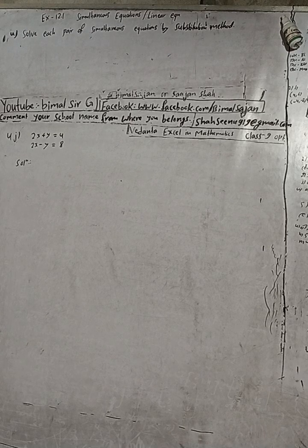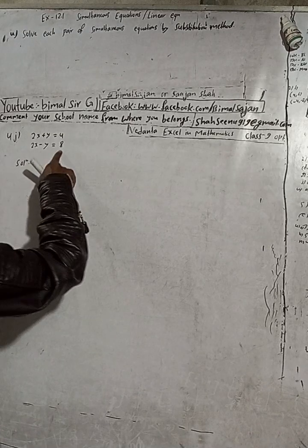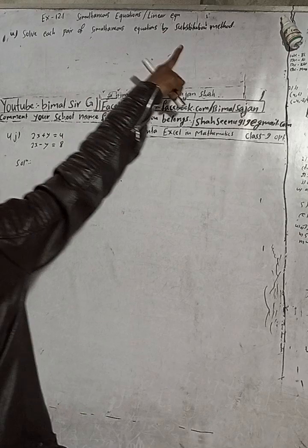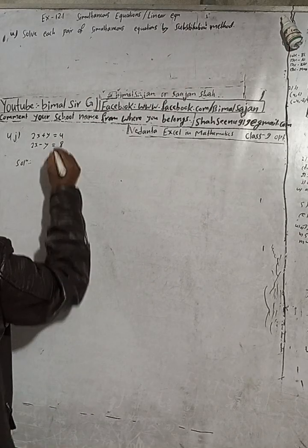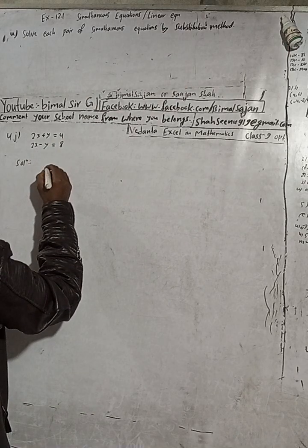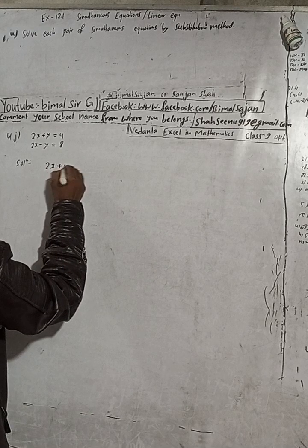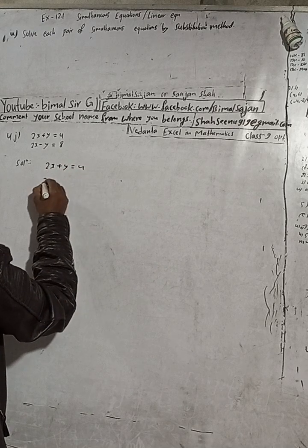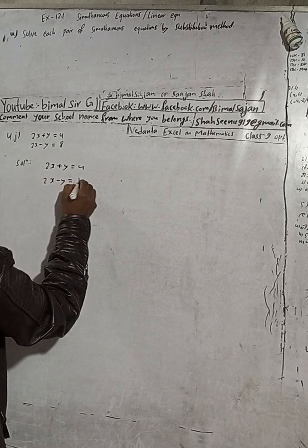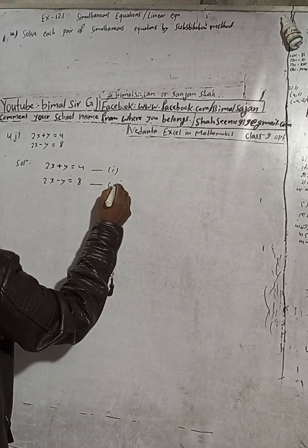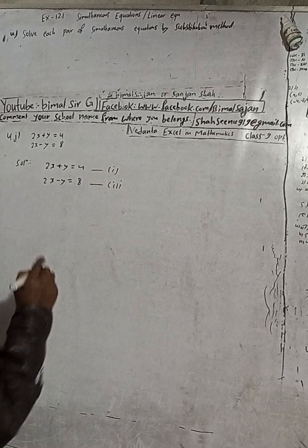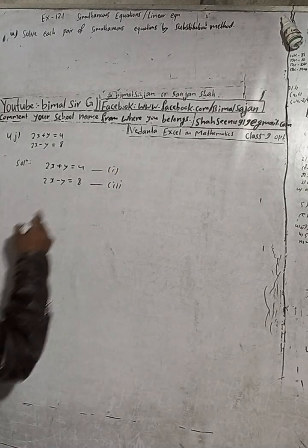The question is to solve by substitution method. Here is the pair of simultaneous equations: 2x + y = 4 and 2x - y = 8. The first one is equation 1 and the second is equation 2.